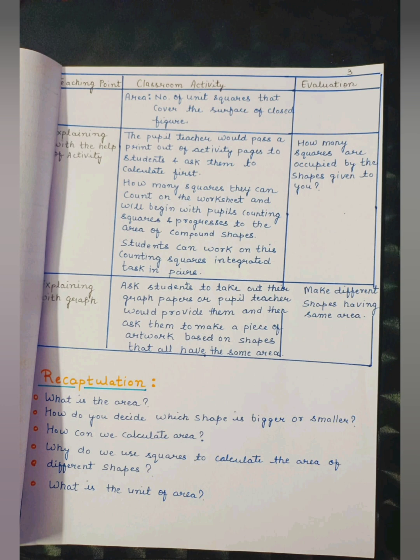Recapitulation: What is the area? How do you decide which shape is bigger or which is smaller? How can we calculate area? Why do we use squares to calculate the area of different shapes? What is the unit of area?